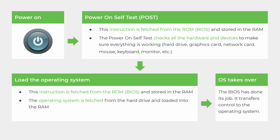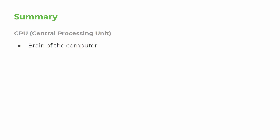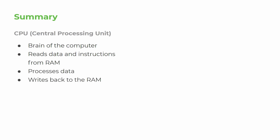So that's the basic startup sequence: you power on, the CPU gets an instruction from the ROM to run some tests, then gets another instruction to load the operating system, and then the OS takes over. Let's run through a quick summary. The CPU — central processing unit — is the brain of the computer. It reads data and instructions from the RAM, processes data, and writes it back to the RAM.